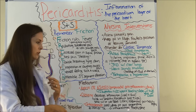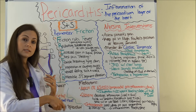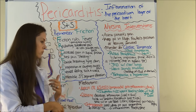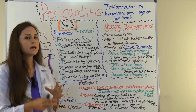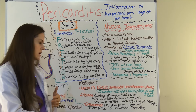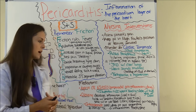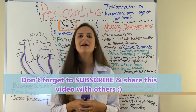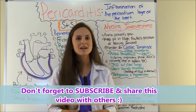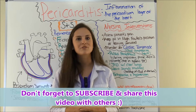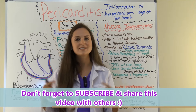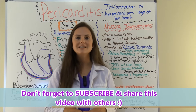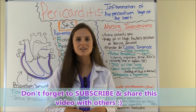When the patient is not responding to these other medications, corticosteroids may be used to help decrease inflammation — one drug sometimes used is prednisone. That covers pericarditis. Go to RegisterNurseRN.com to take the free NCLEX quiz that will test you on this condition. Thank you so much for watching and please consider subscribing to this YouTube channel.